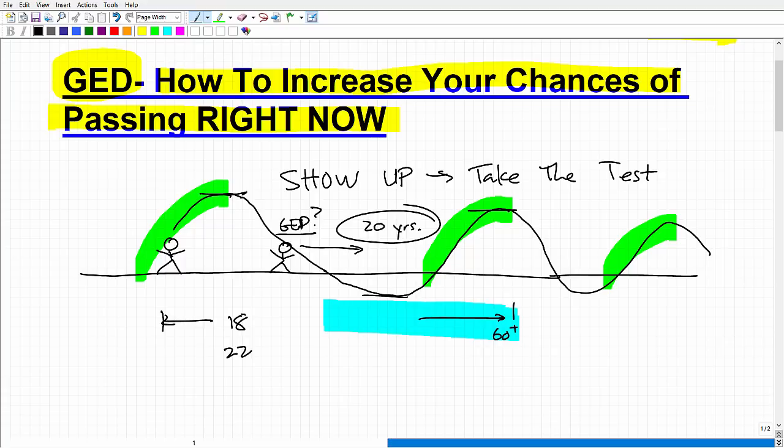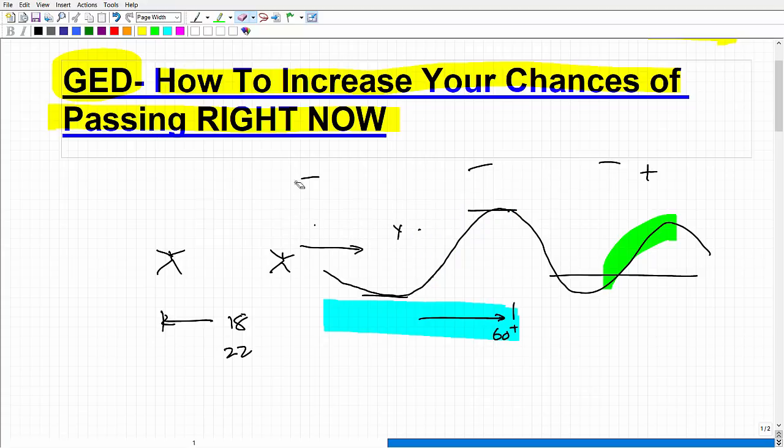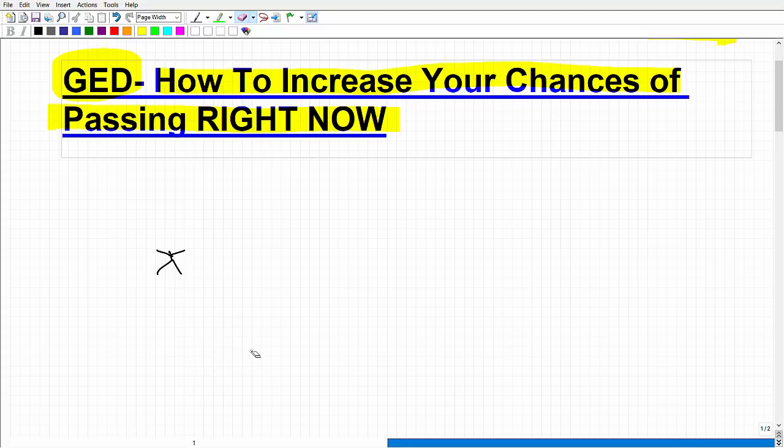You call this paralysis by analysis. I don't know if you've heard that phrase, but it's basically you're frozen by overthinking things. Literally, my best advice to you, and this is where I'm going to give you my little secret for this video, is the following: Don't be one of those people. If you don't have your GED, go take the GED. Even if you don't study, at least you could say you took the GED.